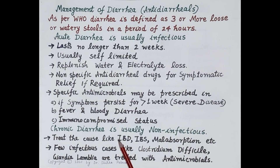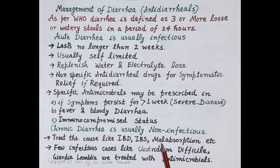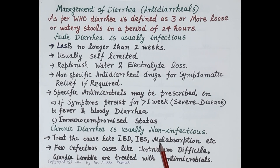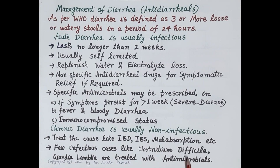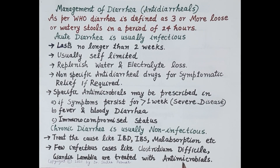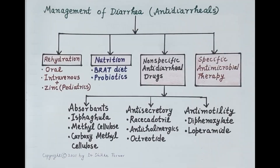Chronic diarrhea is usually non-infectious and is caused by illnesses like inflammatory bowel disease, irritable bowel syndrome, and malabsorption syndrome. Primary therapy is to treat the underlying cause. Chronic diarrhea can also be caused by infections like Clostridium difficile and the protozoan Giardia lamblia, which can be treated with antimicrobials such as metronidazole.